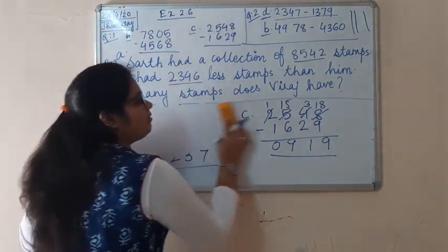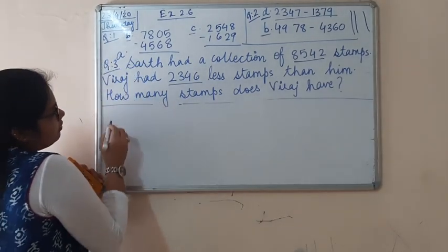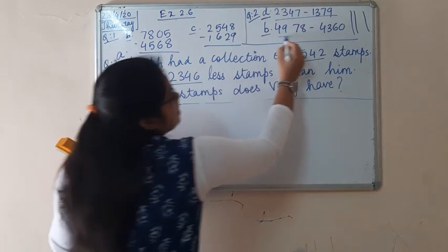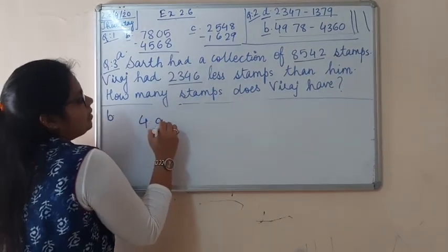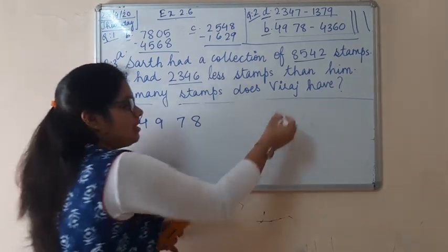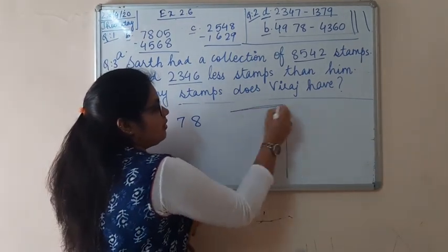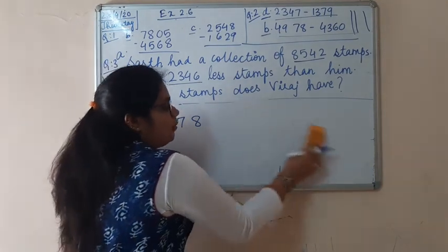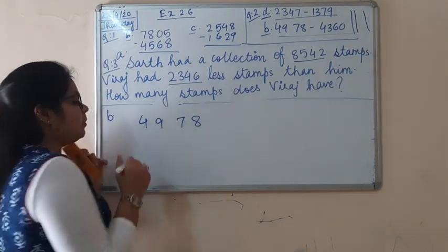If students are writing in the textbook, they can write there also. Let's solve question 2B. 4,970 — you need to arrange them vertically. This is vertical; when you are given a horizontal question, you need to arrange it vertically.